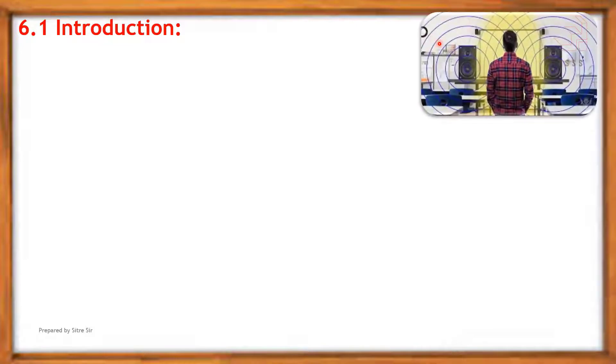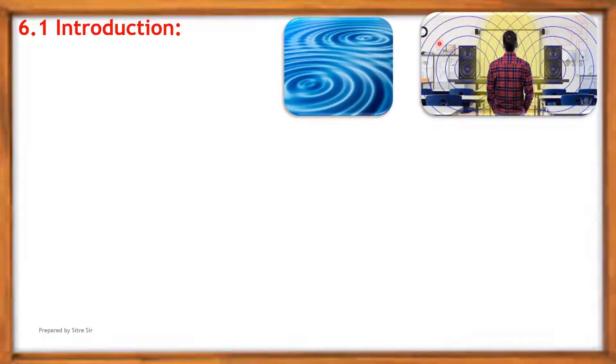First is introduction. All of you might have heard or seen music, ripples on water, visible spectrum of electromagnetic waves. All these are waves and these waves are broadly classified into two types.